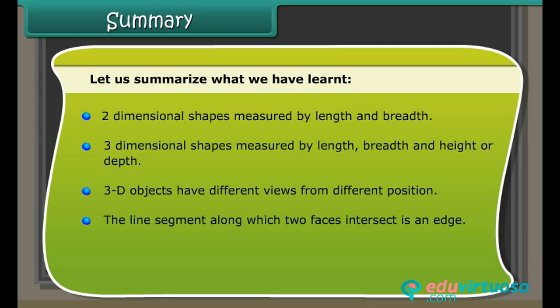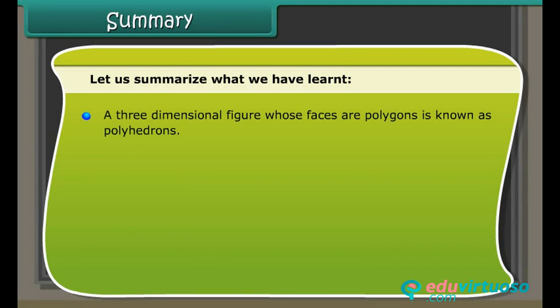The line segment along which two faces intersect is an edge. The points at which three or more faces meet are called vertices. A three-dimensional figure whose faces are polygons is known as a polyhedron. Both prisms and pyramids are named after their bases.